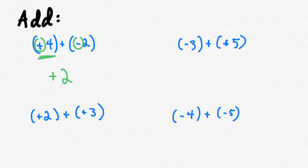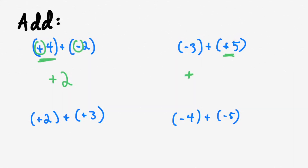Let's do the next one: negative three plus five. Which is greater, three or five? Five is. So since five is greater, I carry that sign — that's a positive. And are the signs different? Yes, I've got a negative and a positive. Since they have different signs, I find the difference of three and five. Five minus three equals two. So this answer is positive two.